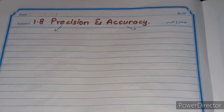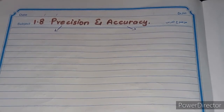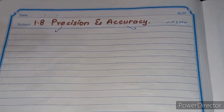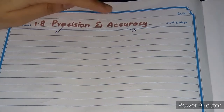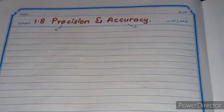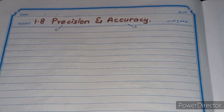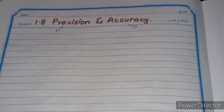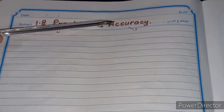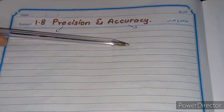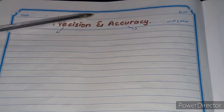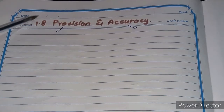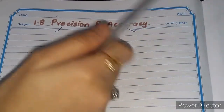We discuss topic 1.8: precision and accuracy. Precision is the value which is close to the measurement, and accuracy is the value which is close to the actual value. For example, take a measurement of a room which is 25 centimeters. If readings came repeatedly as 24.6, 24.6, 24.6, that is precision. If a reading came as 25 centimeters, matching the actual value, that is accuracy.